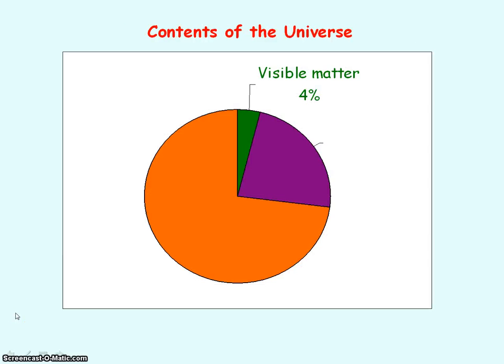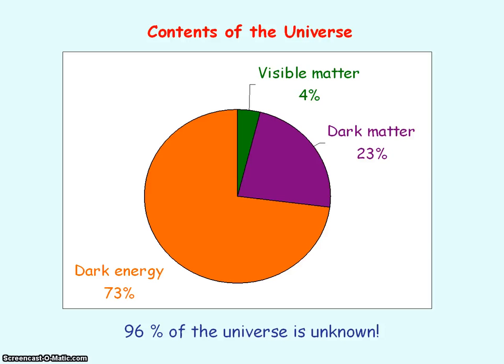And finally, the contents of the universe. 4% is visible matter. So that's the stars and the galaxies, anything that we can see. 23% is dark matter. So things that have mass, but that we can't see. So for example, black holes. And then 73% is dark energy. We don't know a lot about this dark energy. So actually 96% of the universe is unknown. Isn't that amazing? We actually know very little.